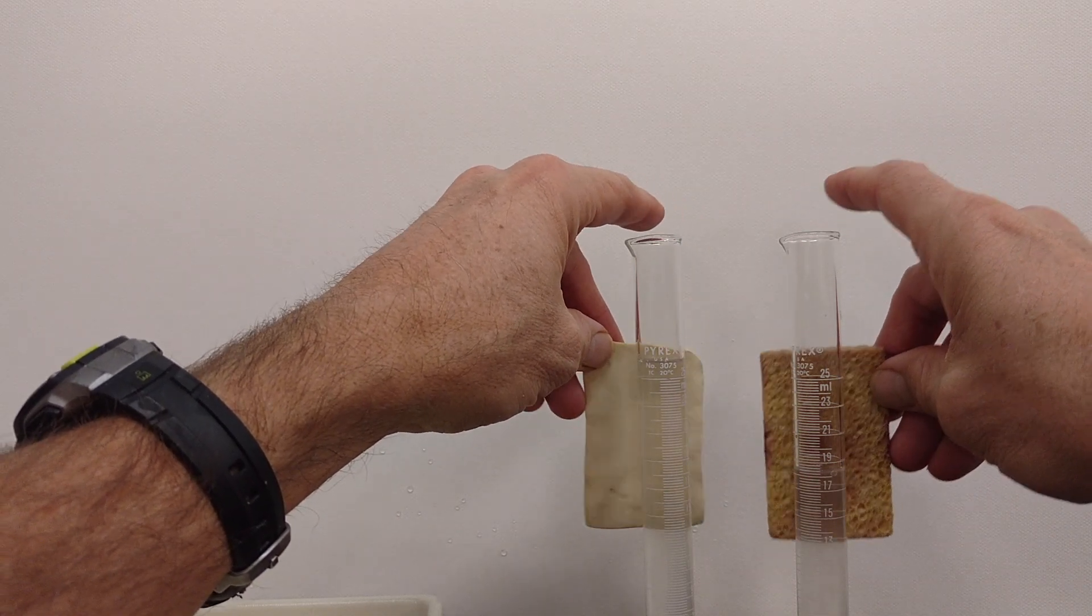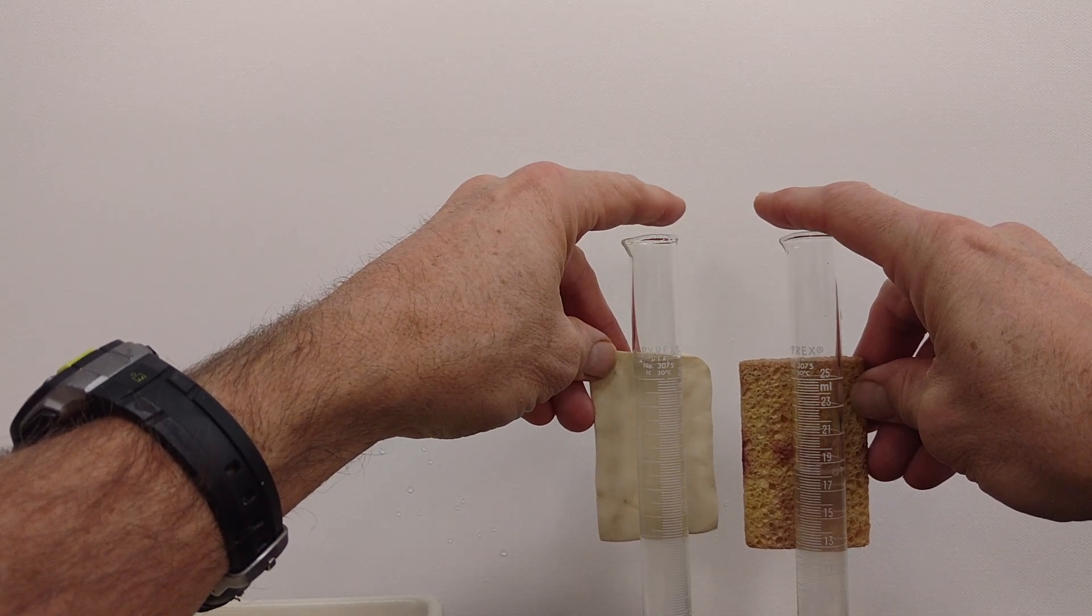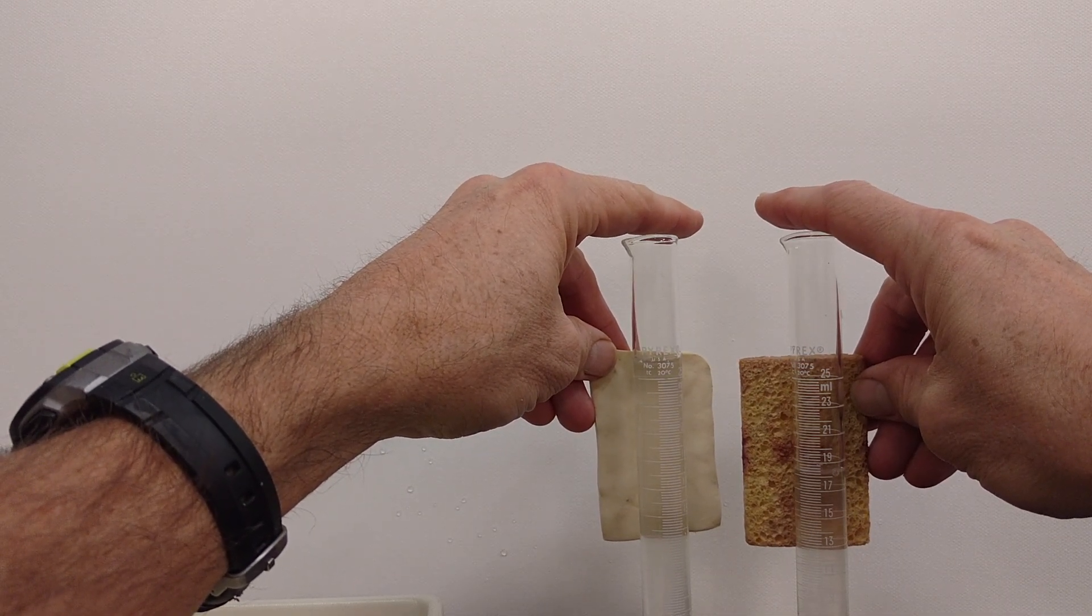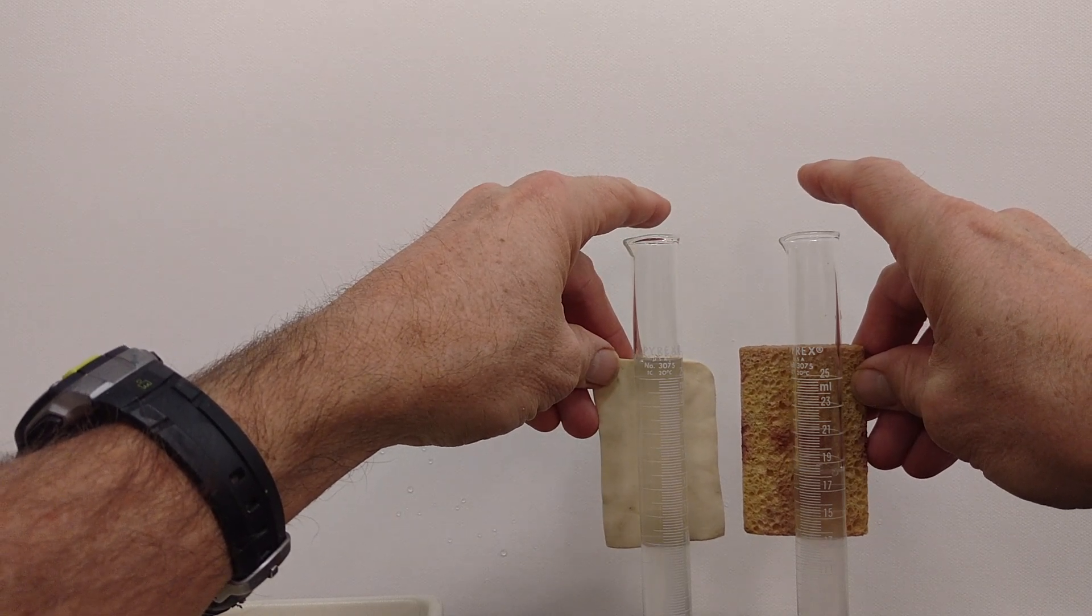In this case, these two sponges of roughly the same size, there's a difference of eight milliliters of water in what we would call plant available water.